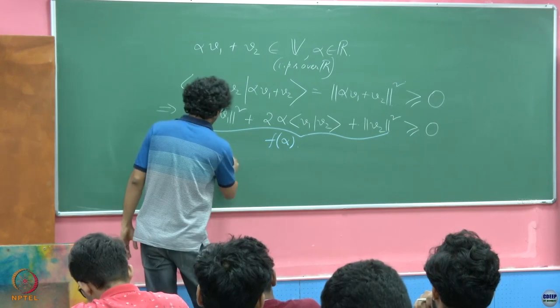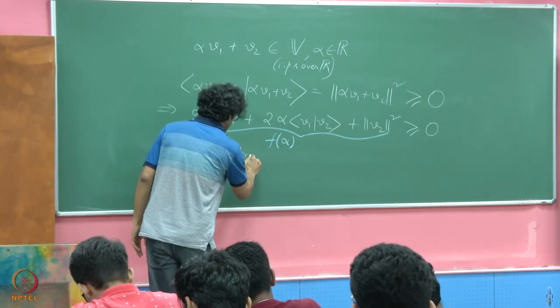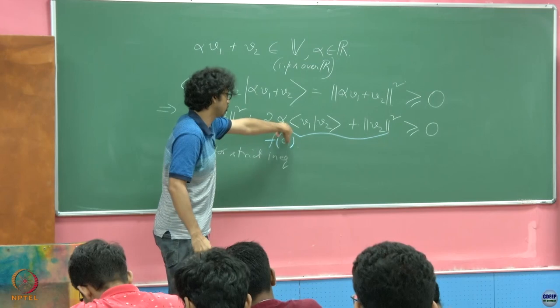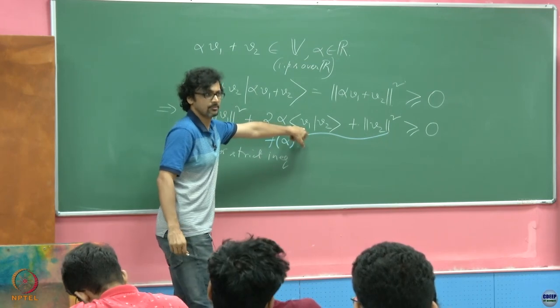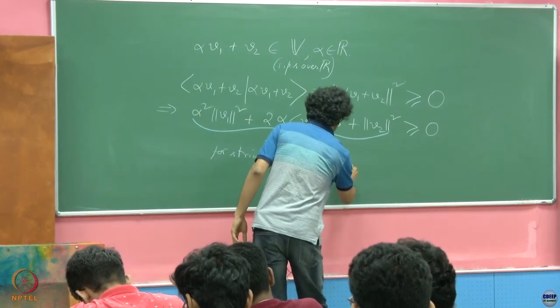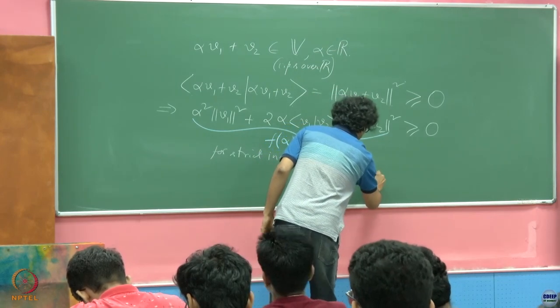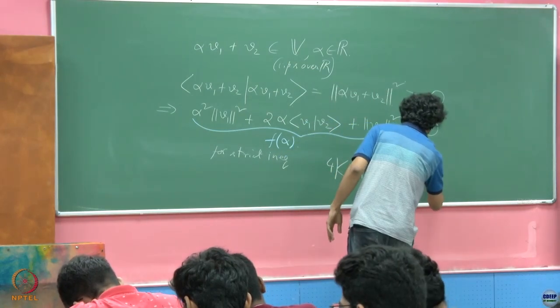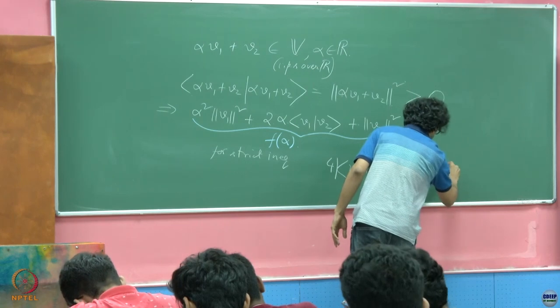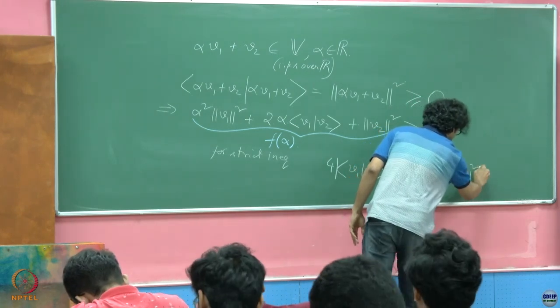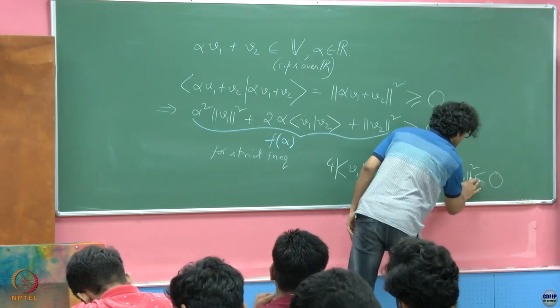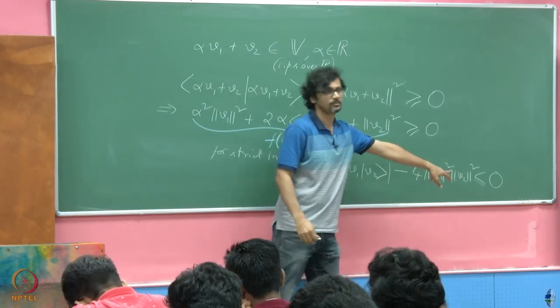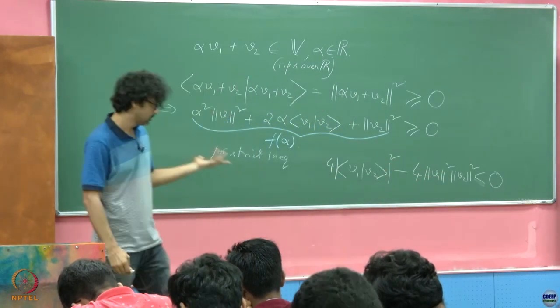For strict inequality, what we shall have is, this is the discriminant: 4 V1, V2, the inner product thereof, minus 4 norm V1 squared, norm V2 squared. This must be negative. Just cancel out the 4 and you have the Cauchy-Schwarz inequality.